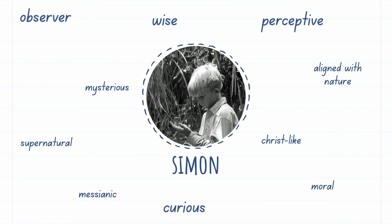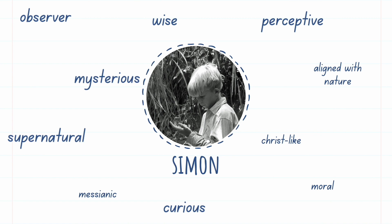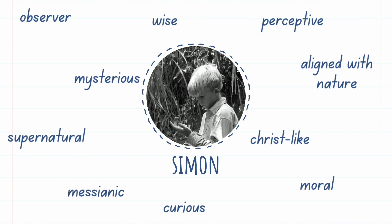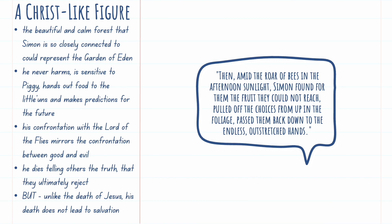I have grouped these words in the following ways. The first set shows Simon as a kind of understanding figure — he's an observer, he's wise, perceptive, and curious. This links nicely to the second set, which shows that Simon is mysterious or supernatural, setting him apart from the other boys. Finally, the last set adds to these ideas: he's Christ-like, he's messianic — meaning related to God or religion — and he's moral. That's a key word to keep in mind whilst thinking about Simon.